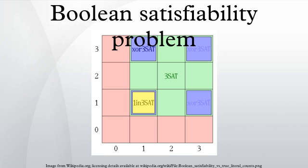Basic definitions and terminology: a propositional logic formula, also called a Boolean expression, is built from variables, operators AND, OR, NOT, and parentheses. A formula is said to be satisfiable if it can be made true by assigning appropriate logical values to its variables. The Boolean satisfiability problem is, given a formula, to check whether it is satisfiable.